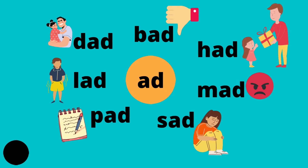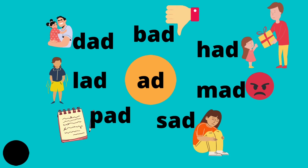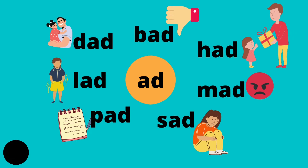Three-letter words that end with a D: dad, bad, mad, sad, lad.